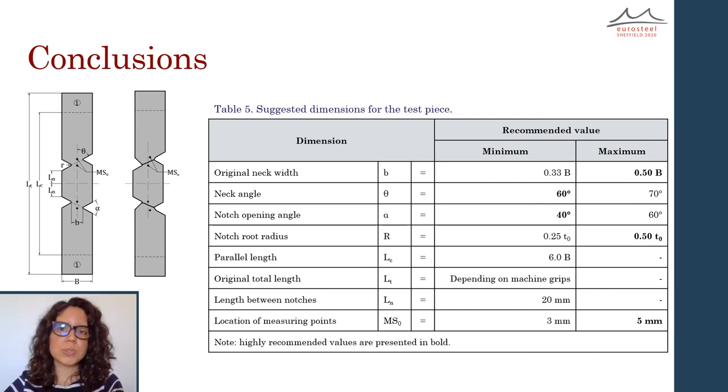Taking all of these conclusions into account, the behavior of the test specimen was well understood, and the dimensions for a standardized test piece were determined, as we can see in this slide. From this research, we can conclude that if the experiment is conducted using a specimen in which the width of the neck is half the total width, the neck angle equals 60 degrees, the opening angle is 40 degrees, and the notch root radius is half the specimen thickness, results with low variation can be obtained without experiencing a premature brittle fracture or a diffuse neck.